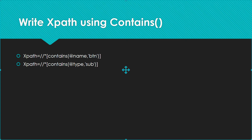Let's get started writing XPath using contains(). The contains() method is used in an XPath expression when the value of an attribute changes dynamically. For example, we have a button name using 'BTN1' and 'BTN2' and it can change — so we can use a partial text of the name and write the XPath, and it will work even if the value slightly changes.